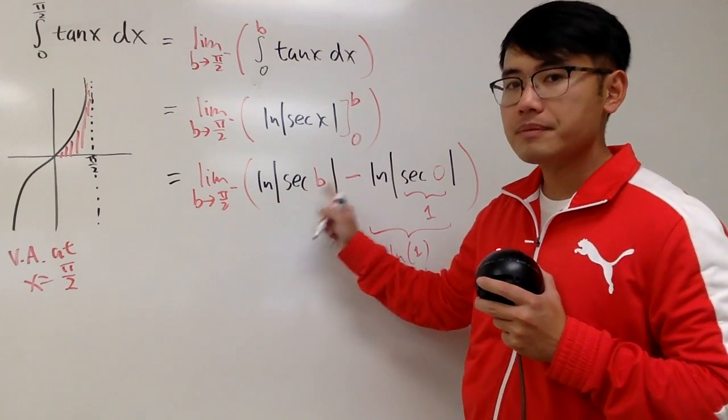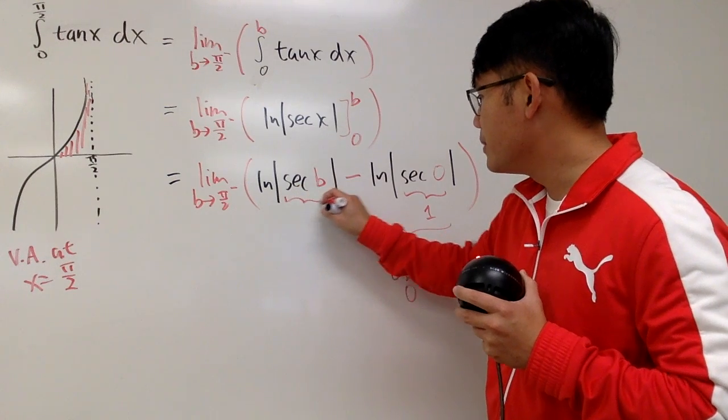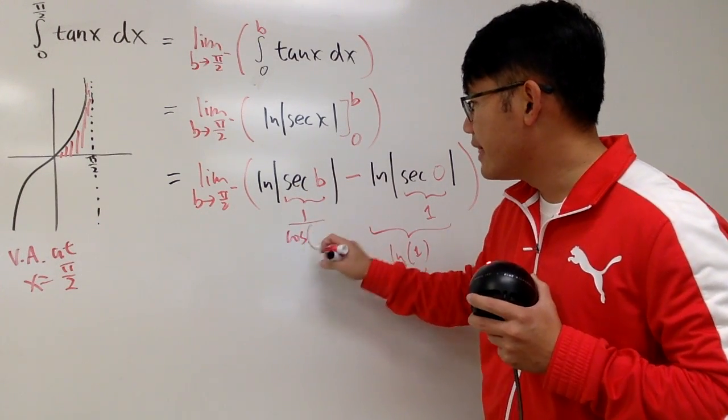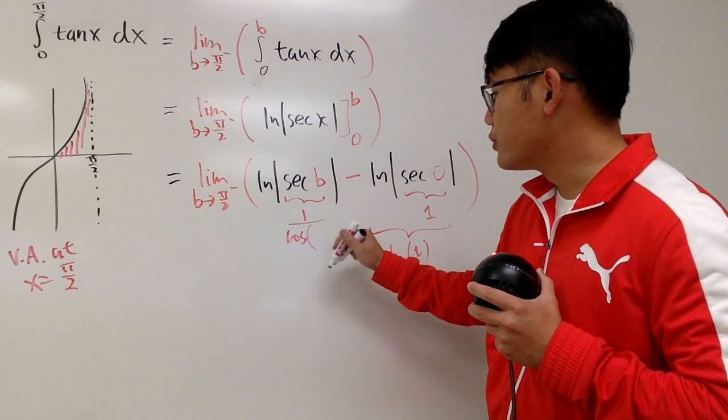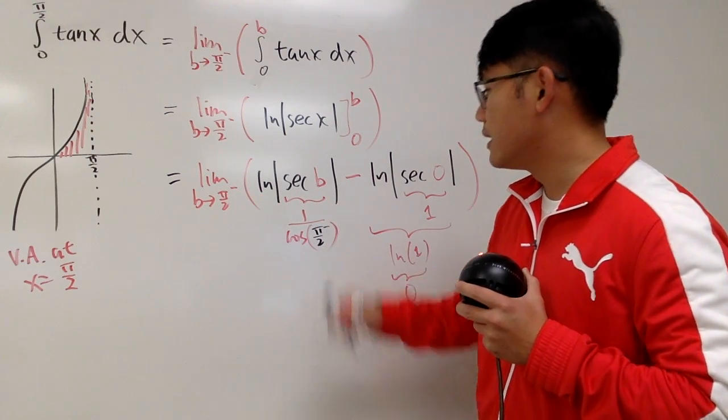So, we see, for the secant, radius 1 over cosine. Therefore, this right here becomes 1 over cosine. And then, again, B is approaching pi over 2 minus, like this. Right?